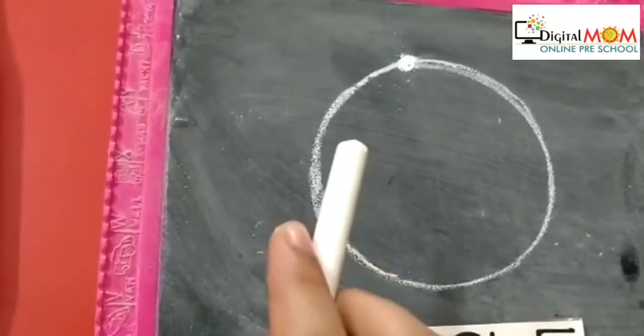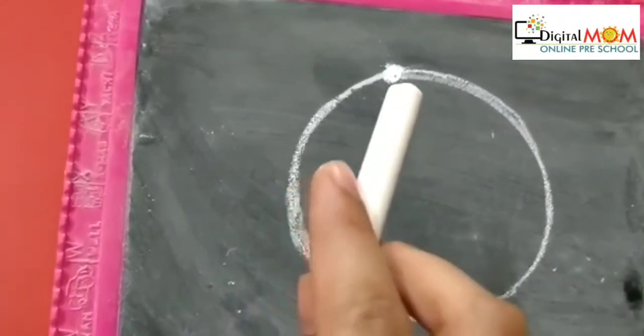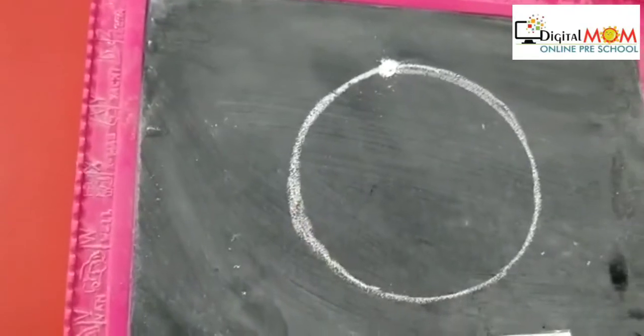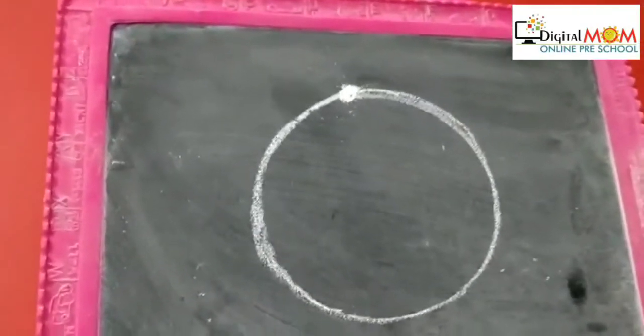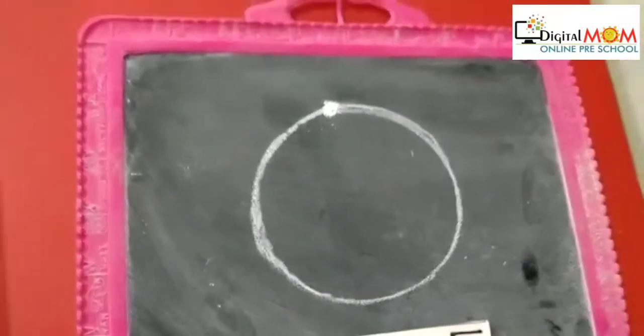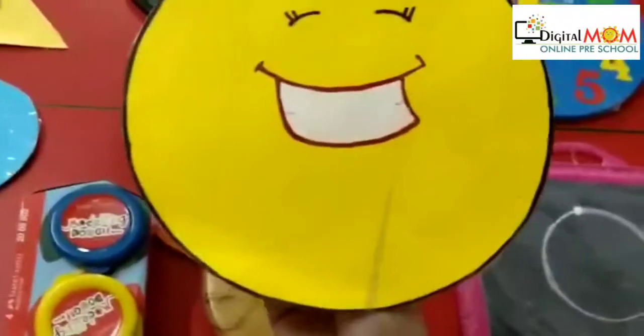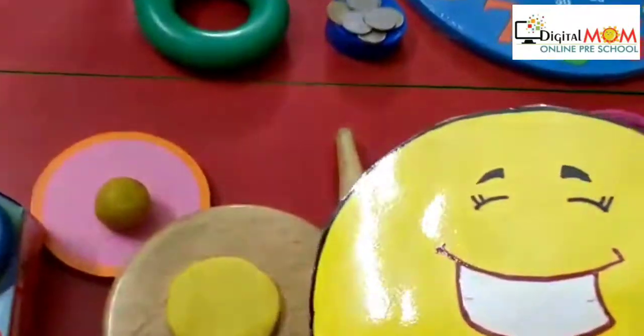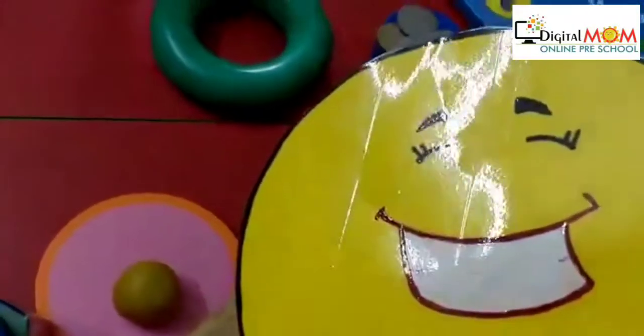It ends where from where it starts. And the best part is, we can find Mr. Circle anywhere. From our chapati to the laddo.